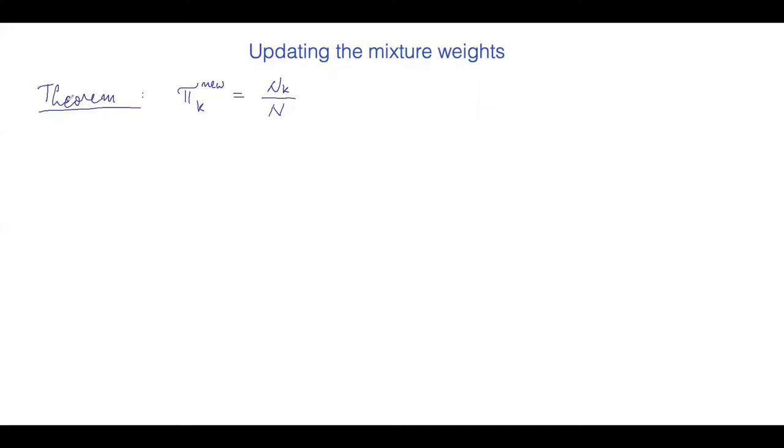In this video, we discuss how to update the mixture weights in the formulation of the Gaussian mixture model. The main result of this lecture is formulated in this theorem we have on the whiteboard, saying that the new values of the weights, π_k, should be set to n_k over N.